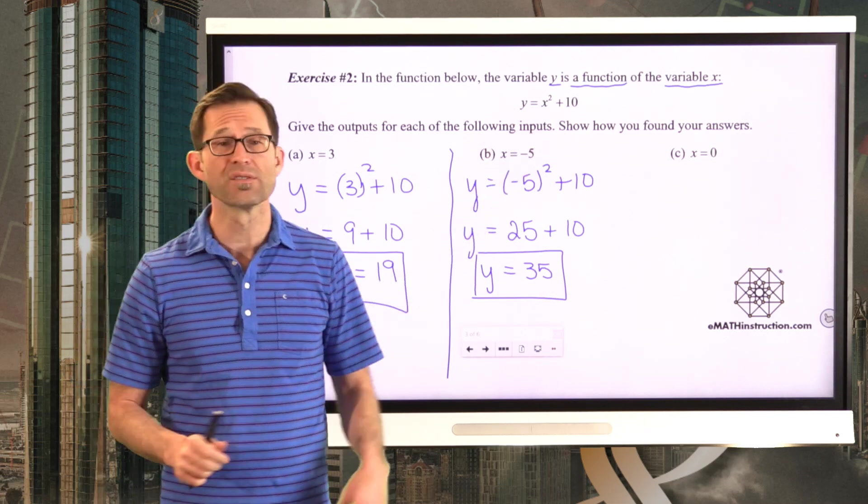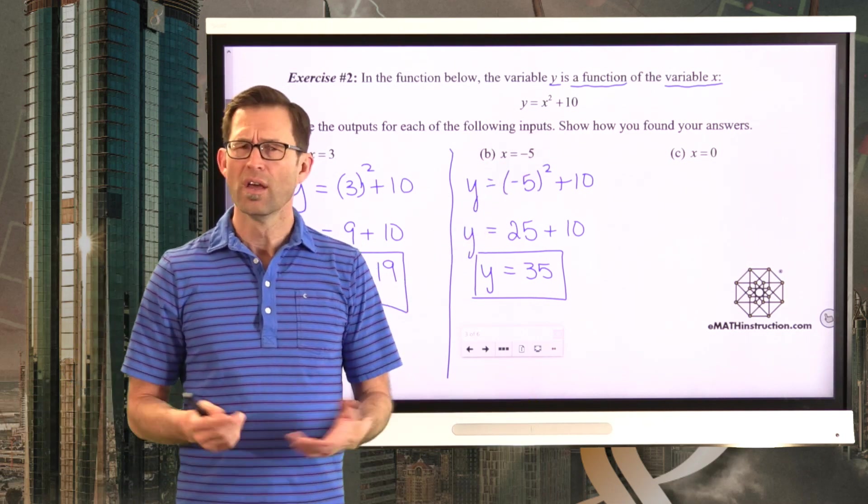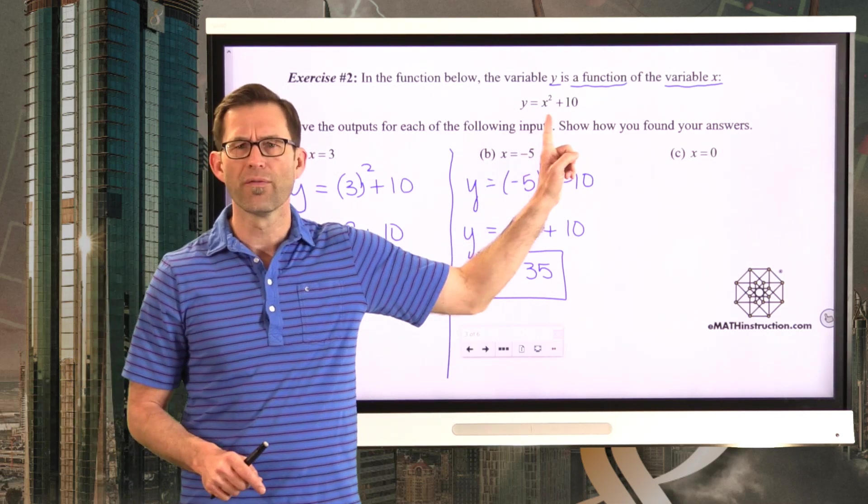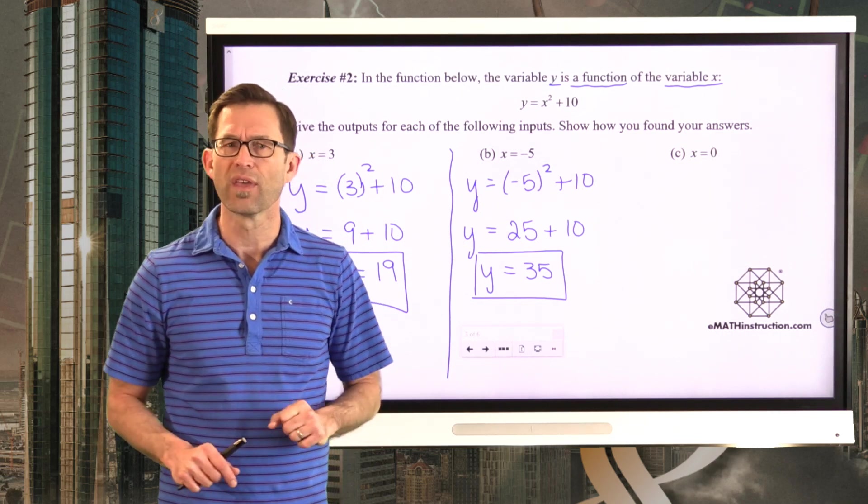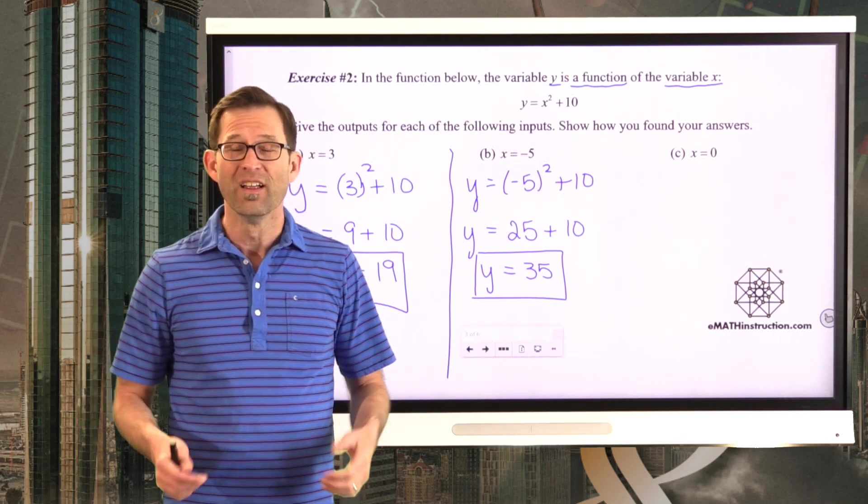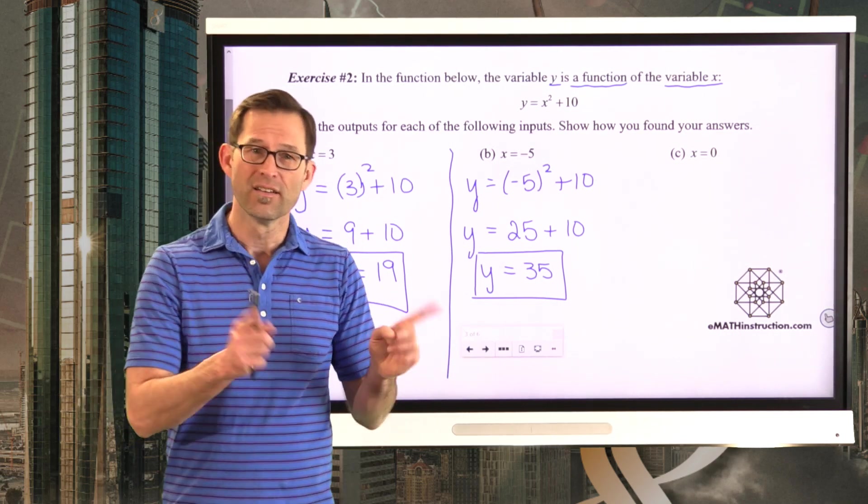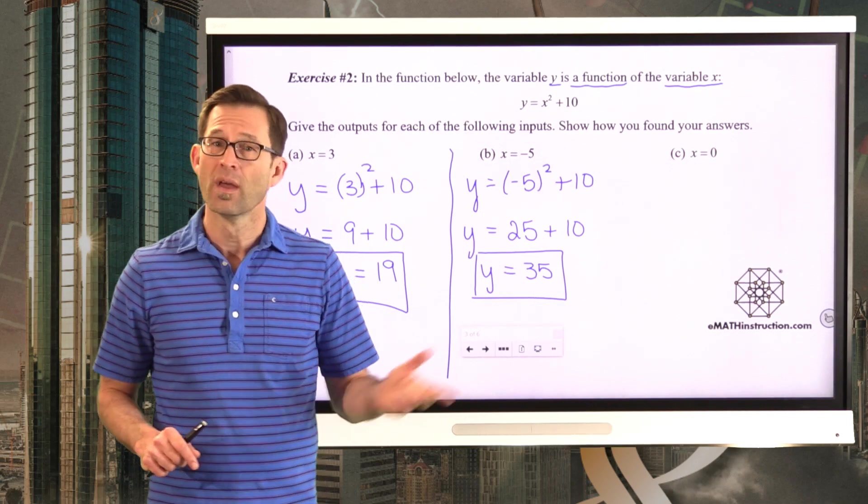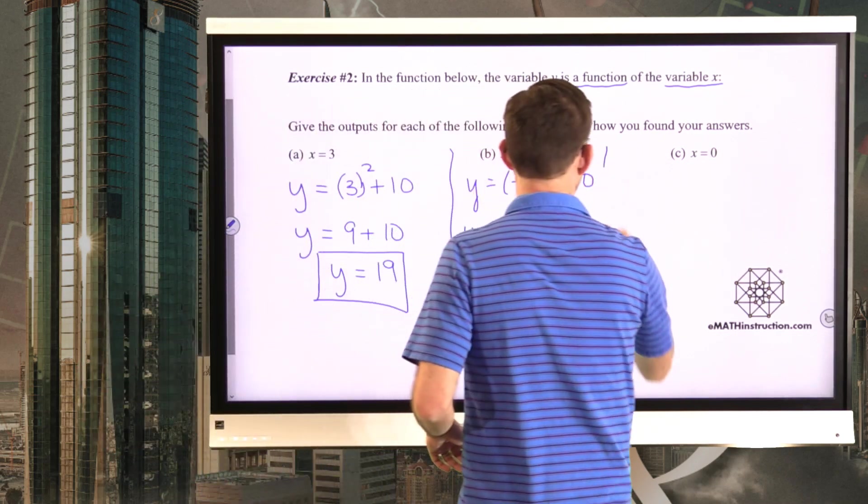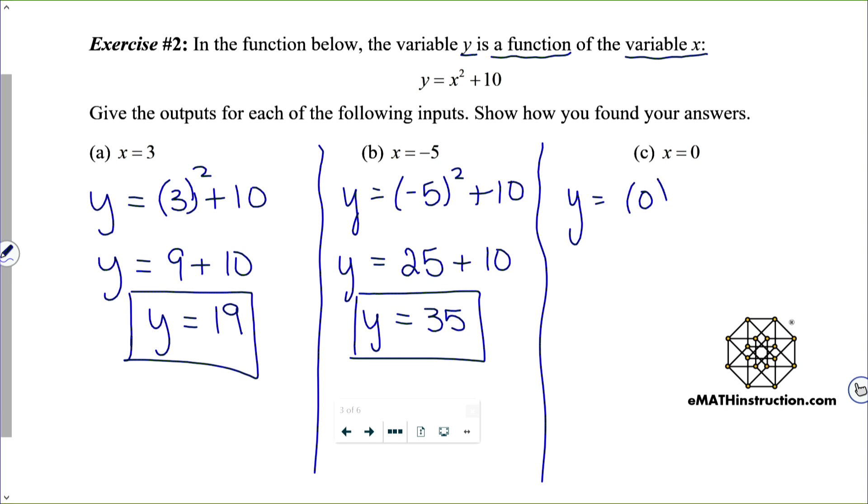A nice rule tells us exactly what to do with the input. Take the input, multiply it by itself, and then add 10. That's how we get the output. That's our rule. Square the input, add 10. That's our rule to give us the output. And of course, when x is 0, very easy here, we're going to have 0 squared plus 10. 0 times 0 is 0, and 0 plus 10 is obviously just 10.